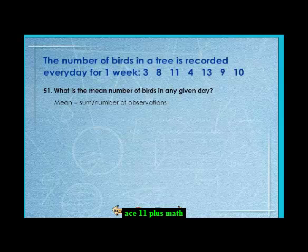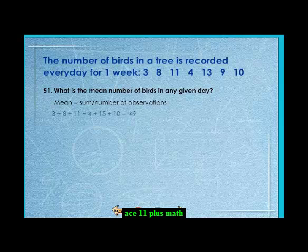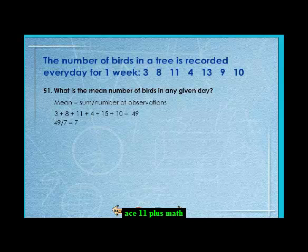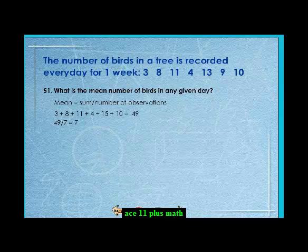The mean or average is the sum of all the observations divided by the total number of observations. Adding up all the numbers, the sum is 49. Divide 49 by 7 and we get the answer, 7.